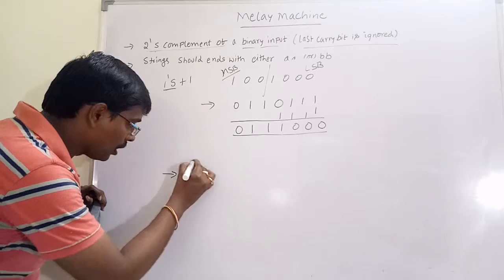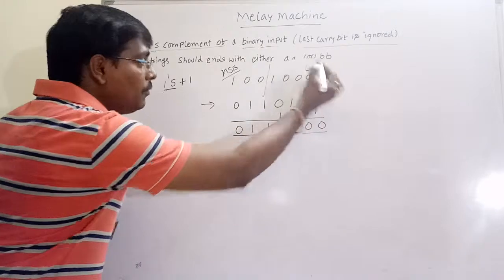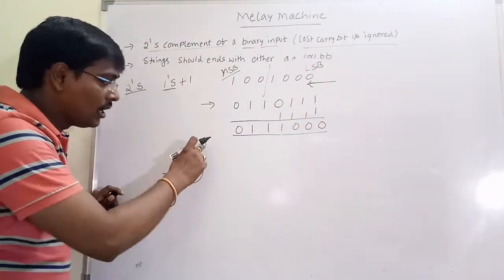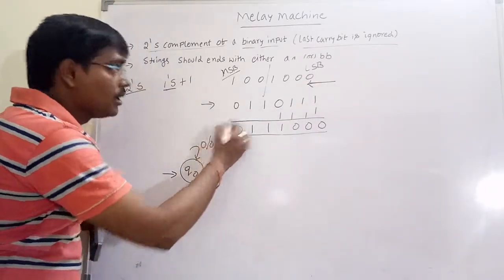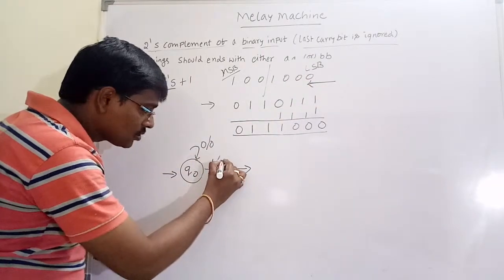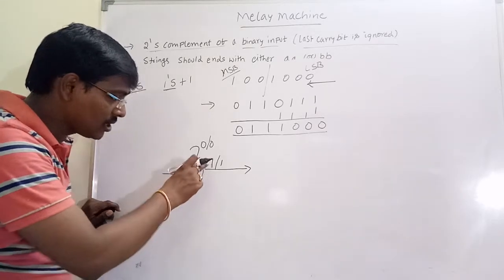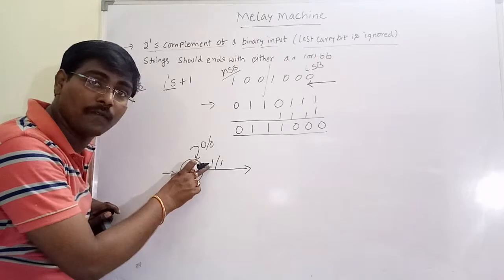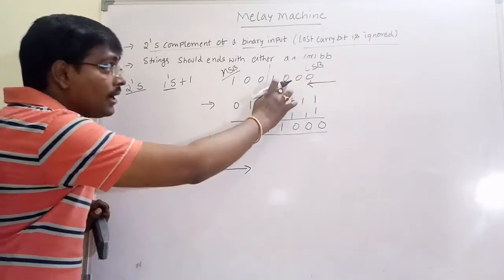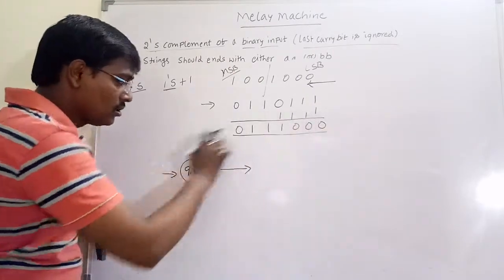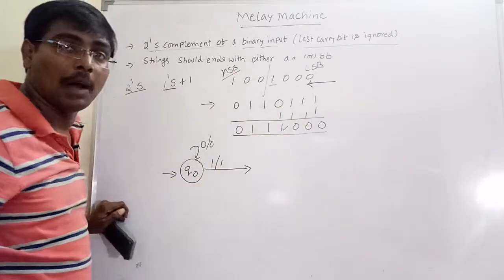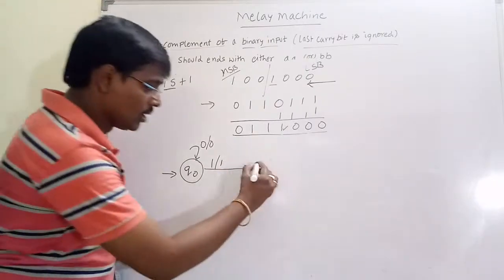Initially we are at state q0, and remember we are moving from LSB to MSB. At q0, if input is 0, output is also 0. If input is 1, output is 1, because we are at the initial state and this 1 is the first non-zero term. So for input 0 the answer is 0, and for input 1 the answer is 1, up to the first non-zero term.